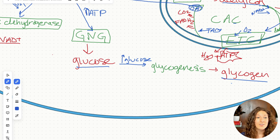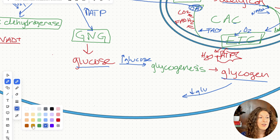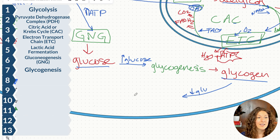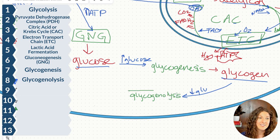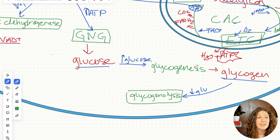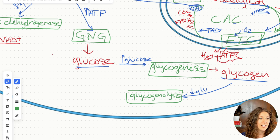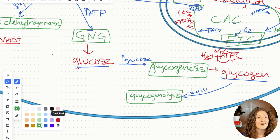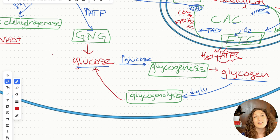Whenever we need glucose — whenever we have low glucose levels — we'll go ahead and break that glycogen down through a pathway called glycogenolysis. Lysis meaning breaking. Glycogenolysis: we're breaking glycogen down. Glycogenesis: we are forming glycogen. Glycogenolysis breaks down glycogen back to glucose for use in glycolysis in the cells.